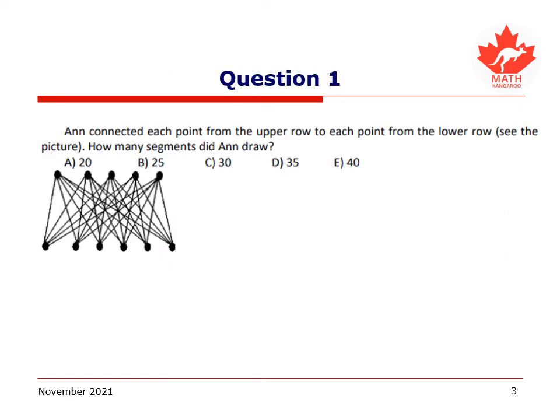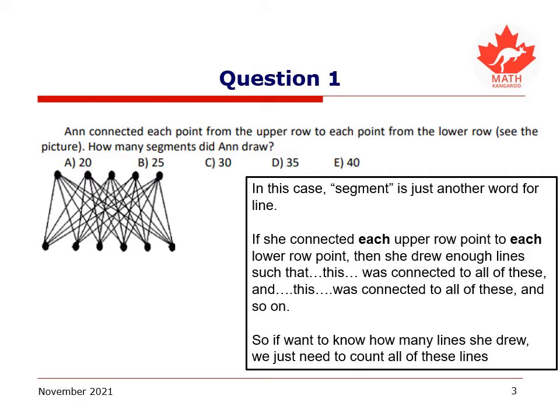Our first question tells us that Ann connected each point from the upper row to each point from the lower row. The upper row just means the top row of points and the lower row just means the lower row of points in this picture. We've got quite a tangle of lines, so it seems like it'd be hard to just count them outright. But we're asked: how many segments did Ann draw? In this case, segment is just another word for line, so we're really just asking how many lines did it take her to make this picture.